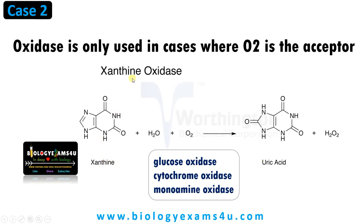This is xanthine. Xanthine oxidase is an enzyme, and xanthine is oxidized to uric acid. As you see, addition of oxygen has happened. Here, the acceptor or the oxidizing agent is oxygen, as you can see here. Therefore, the term oxidase is used. At the product side, either hydrogen peroxide or water is formed in such reactions.